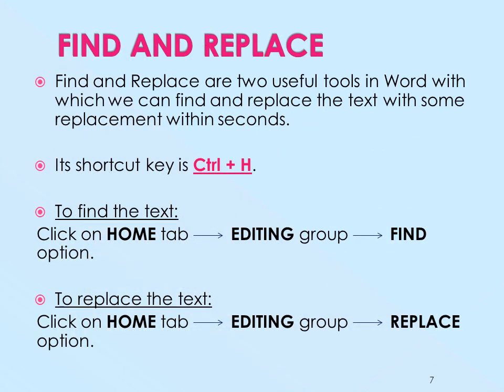Next is the find and replace tool. Find and replace are two useful tools in MS Word with the help of which we can find and replace text within seconds, without wasting any time. The shortcut key for it is Ctrl+H. To find text, go to the home tab, then the editing group, and then the find option. To replace text, go to the home tab, then the editing group, and then the replace option.